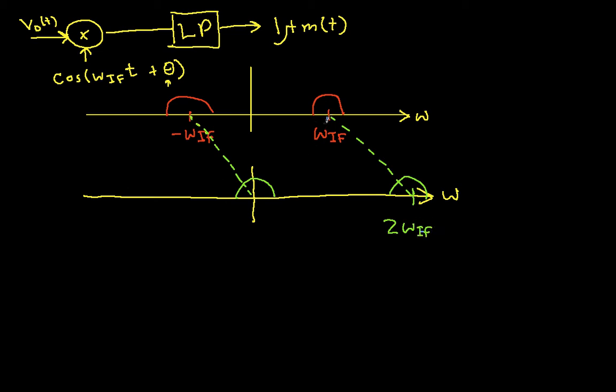And then this bump also gets shifted down here, minus 2 omega IF. So I'll have the green bump at the origin plus the blue bump at the origin, and again that contains the spectral information of M of T that I want.